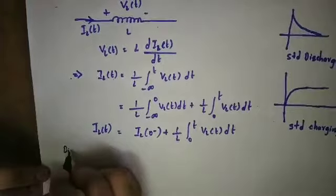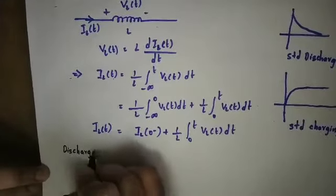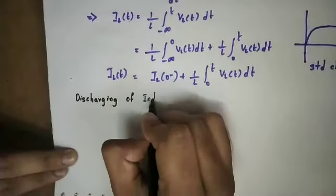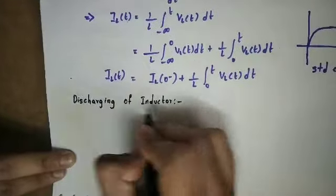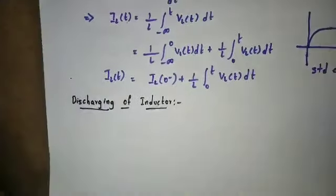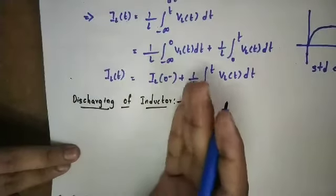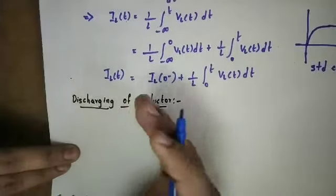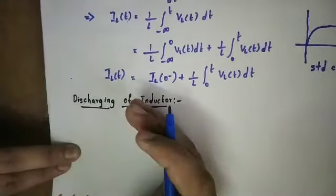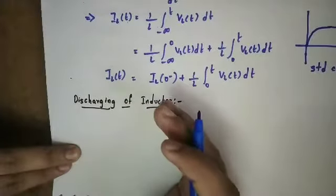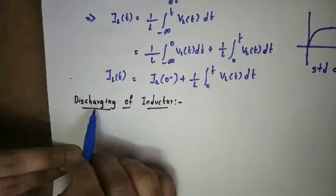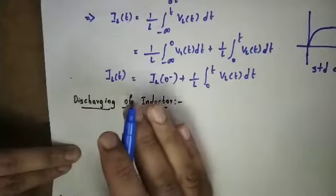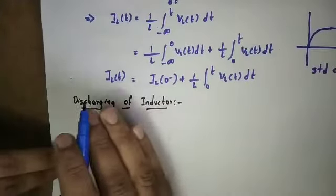Discharging of inductor. This is the idea of the inductor. During inductor discharge, the inductor has been charged through a power source. Our inductor can do work and has been delivering power. Power is delivered during discharging of the inductor.